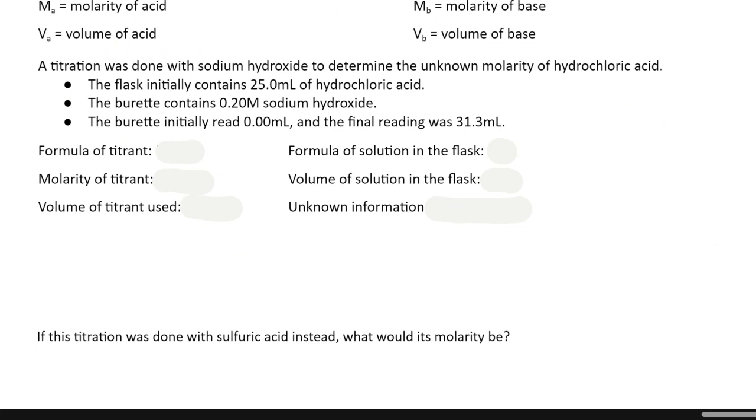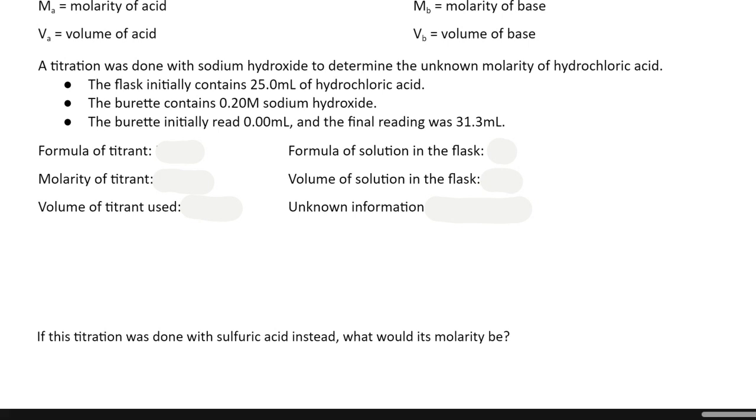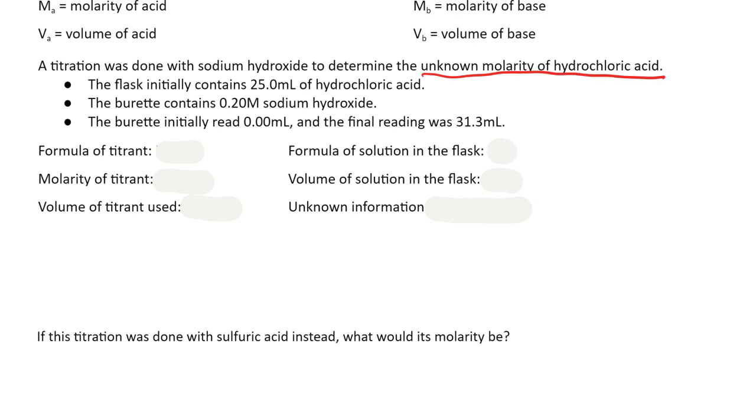Let's do an example here. So it tells me the titration was done with sodium hydroxide, the unknown right here it says is the unknown molarity of the acid. So the thing I'm going to be solving for is the acid's molarity, that's our goal to figure out. Now it tells me that the flask initially contains 25 milliliters of the acid. The unknown thing always goes in the bottom. It tells me it's hydrochloric acid, which is HCl, and it tells me we had 25 milliliters of that. So there's all my acid information.